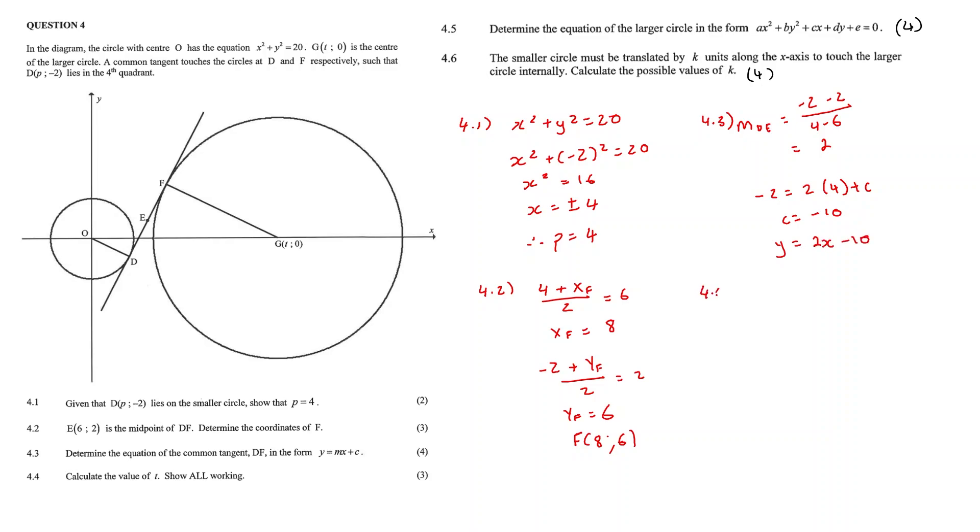Question 4.4: Calculate the value t, show all working. So t is the x coordinate of the center of the larger circle. To do this, we can first get the gradient of FG as it's perpendicular to the gradient of DE. So if the gradient of DE is equal to 2, the gradient of GF must then be negative 1 half, as these two gradients times together needs to equal negative 1.